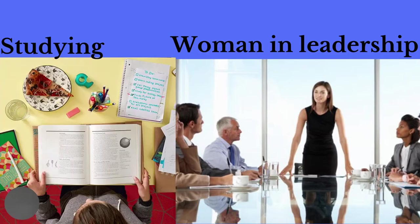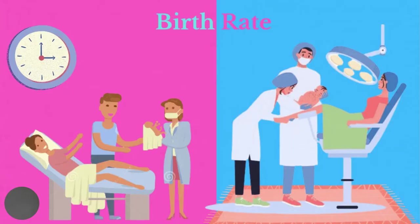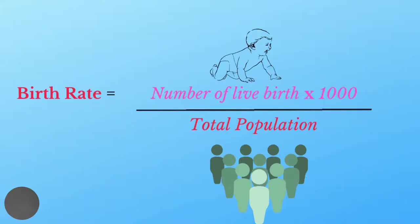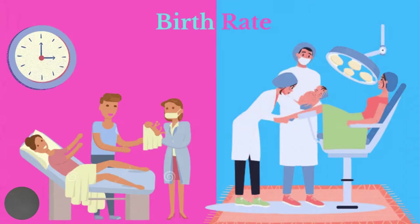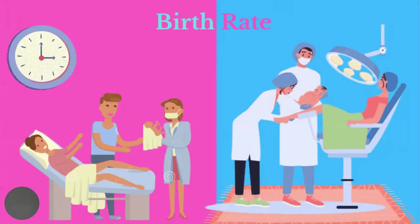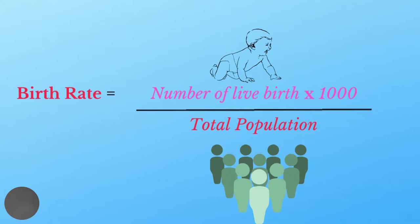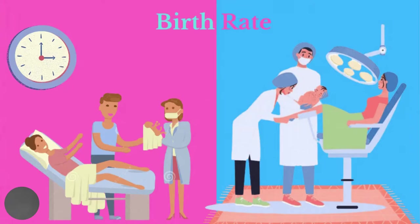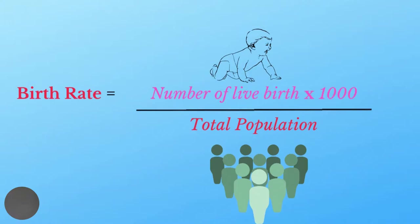Furthermore, there is a greater availability of contraceptives. Another factor is birth rate, which refers to the number of babies born alive per 1,000 persons per year. Birth rate can be calculated by dividing the number of births by the total population and then multiplying the value by 1,000. Since fertility rate has fallen, birth rate has also fallen throughout the Caribbean.